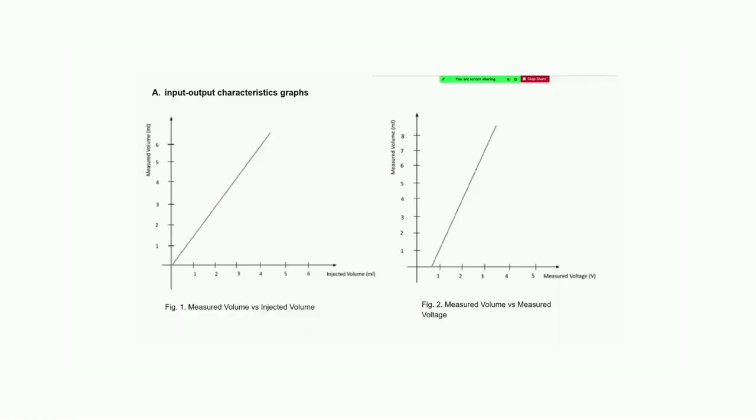So, these are our input-output characteristic graphs. The first graph is for measured volume versus injected volume and the second one is for measured volume versus measured voltage. So, we can reverse this data to actual limb segment data. There we input voltage and we can get the volume measurement from these graphs and we can say whether they have any abnormalities.